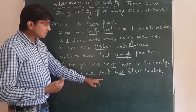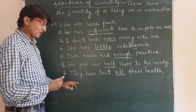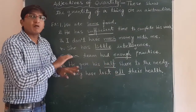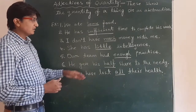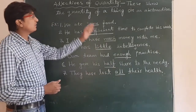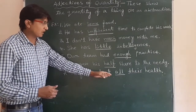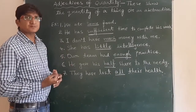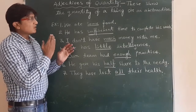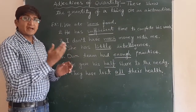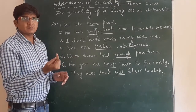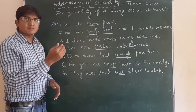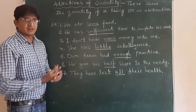Seventh: 'They have lost all their health.' How much health did they lose? All — so 'all' is also an adjective of quantity. Remember, adjectives of quantity are found by asking the question 'how much,' and whatever answer we get to that question will be the adjective of quantity.